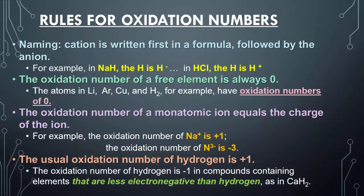The usual oxidation number of hydrogen is positive one. On occasion, though, hydrogen does have a negative one charge, and this is when it's combined with less electronegative elements — for instance, calcium.